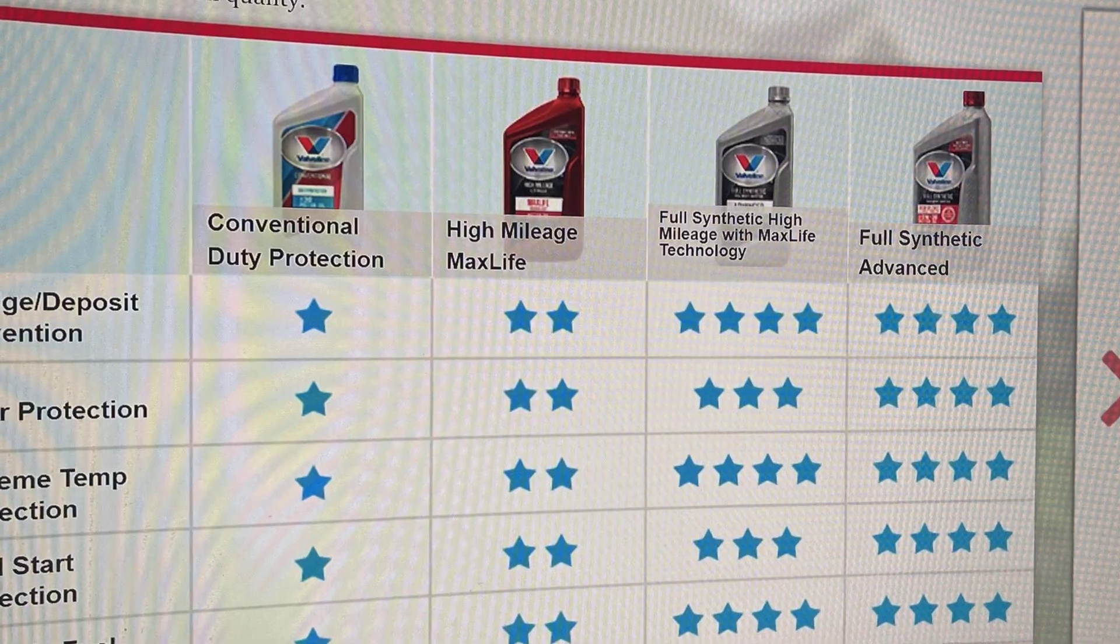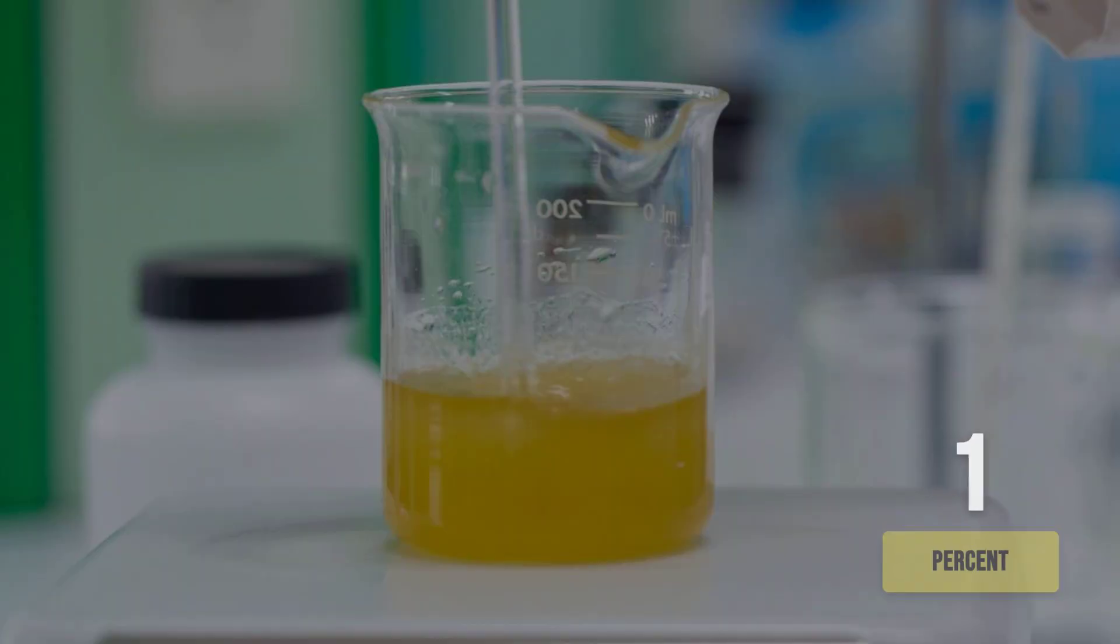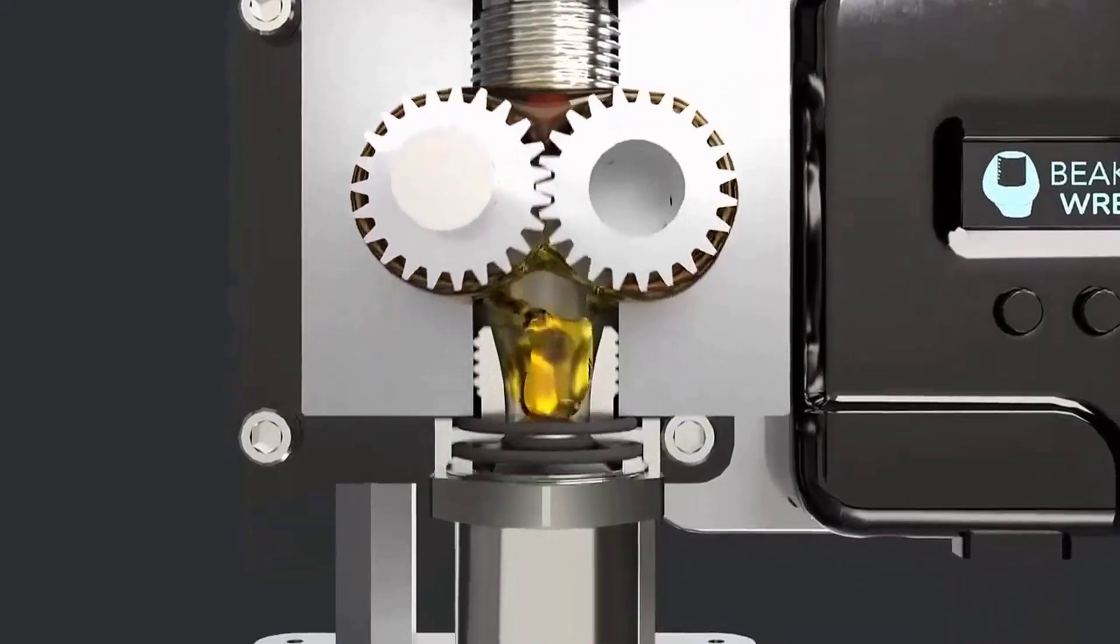Yet a close look at the product data sheet tells a different story. The so-called high mileage advantage comes down to a small percentage of seal conditioners, typically just one to two percent of the total additive package, blended into a conventional Group 2 base oil.